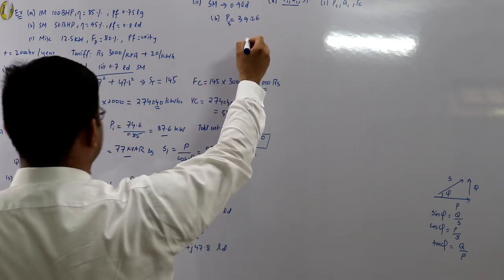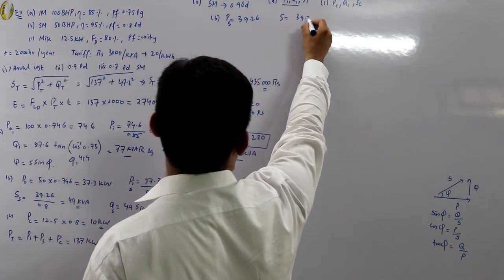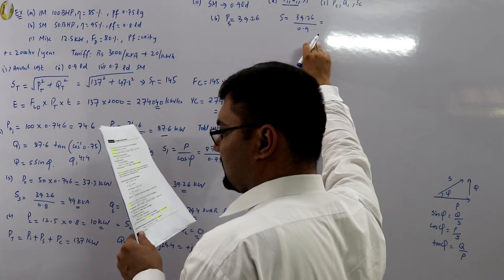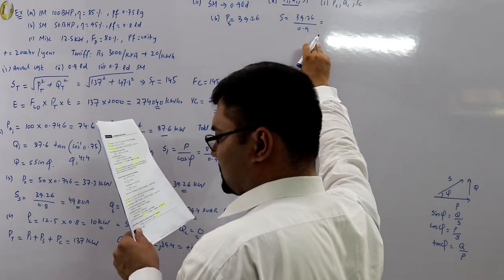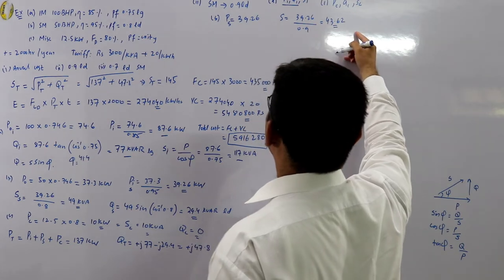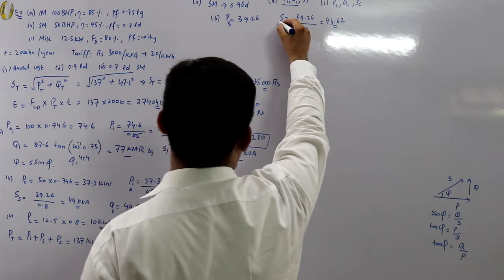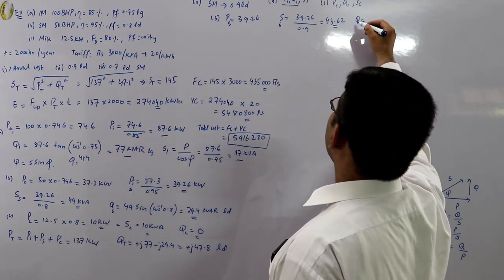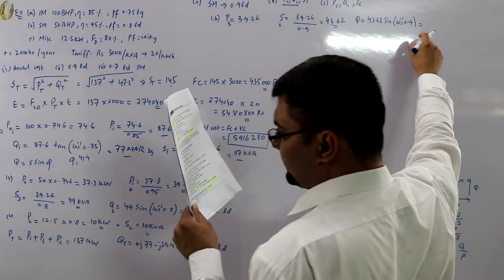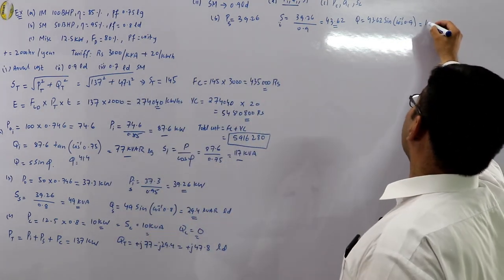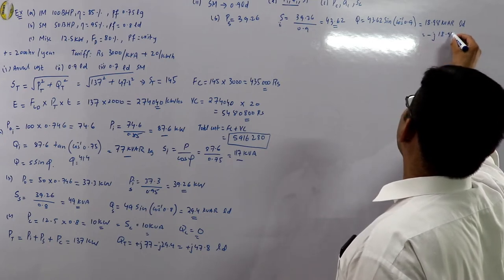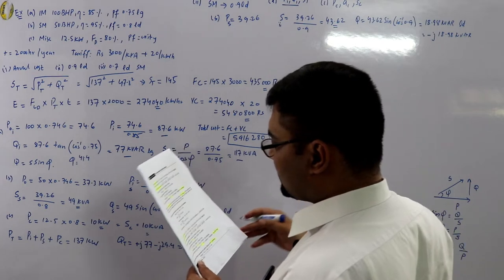For the synchronous motor at 0.9 leading: the input power remains 39.26 kW. S₂ = P / cos φ = 39.26 / 0.9 = 43.62 kVA. Q₂ = S₂ × sin(cos⁻¹ 0.9) = 18.98 kVAR leading, written as −j18.98 kVAR.